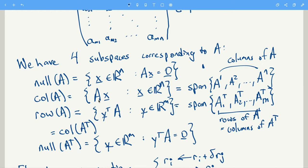So you have to solve AX equals zero. That gives you all the vectors in the null space. We have the column space. Instead of looking at the equation AX equals zero, try and find all the possible values of AX. So all the vectors AX where X is in RN.